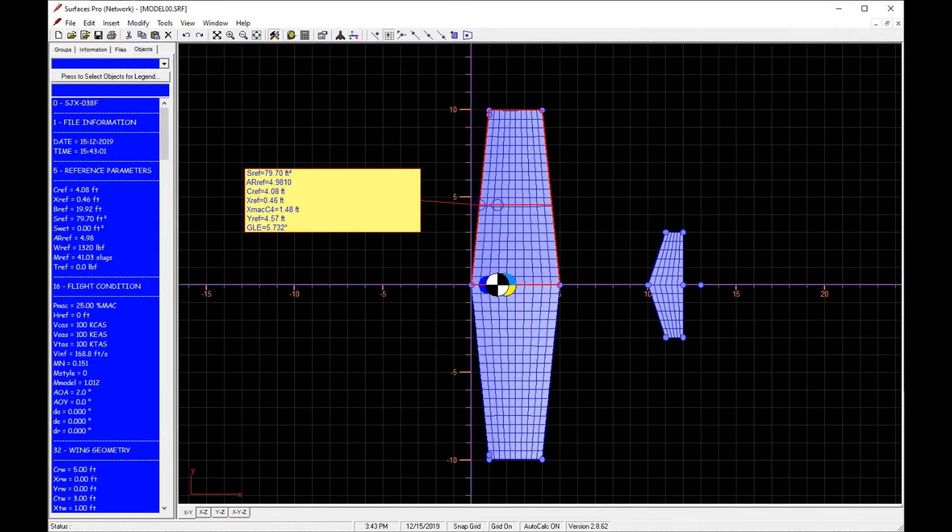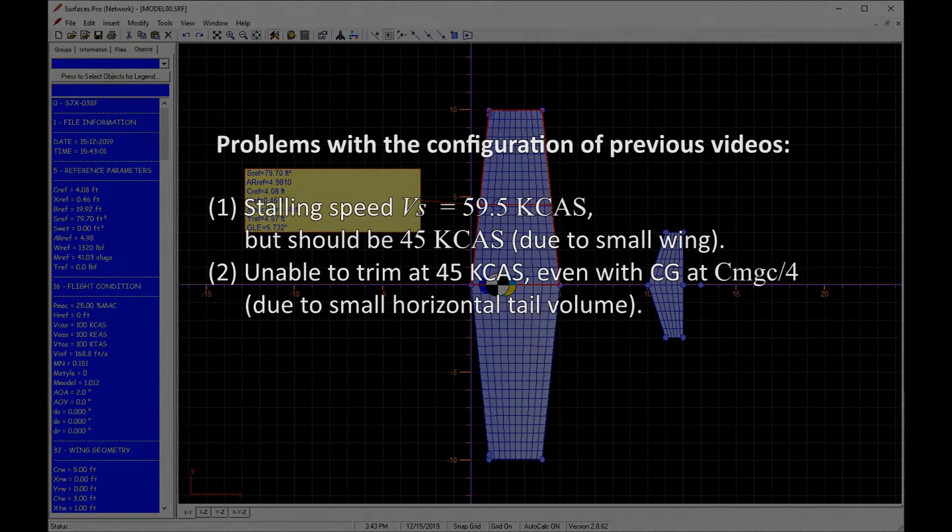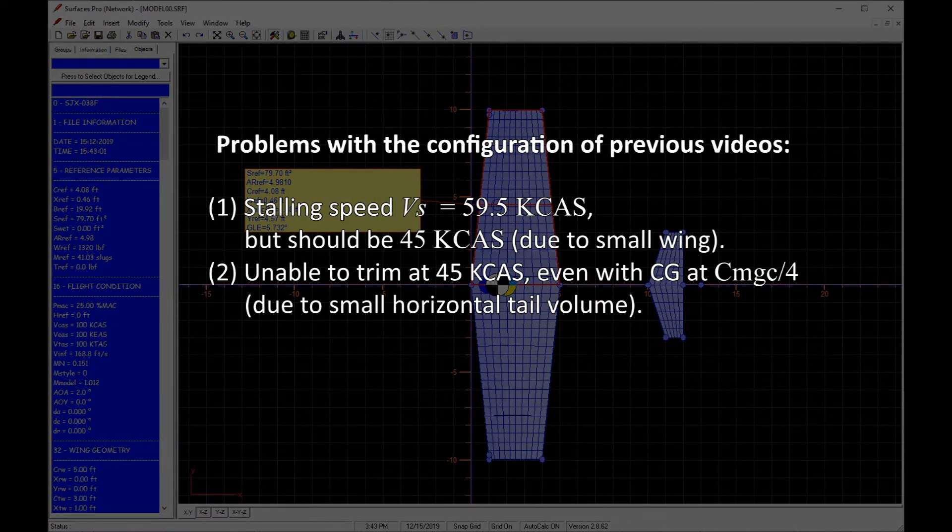Greetings fellow aircraft designers. In this video I'll continue to work on the light sport aircraft from videos past. The third video demonstrated that the configuration devised was altogether unacceptable. It had a stalling speed of almost 60 kcats, some 15 knots above the LSA requirement. It was unable to trim at 45 kcats with the center of gravity at the quarter chord of the mean geometric chord. In short, it had too small a wing and too small a horizontal tail volume.